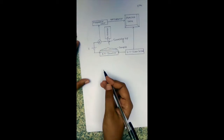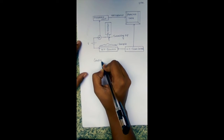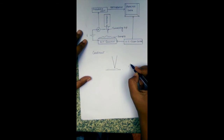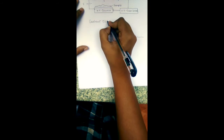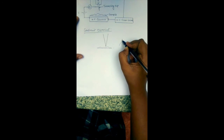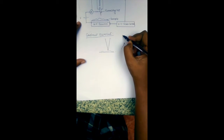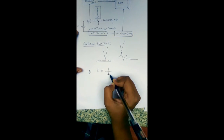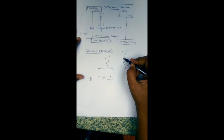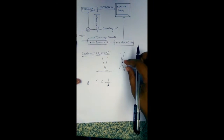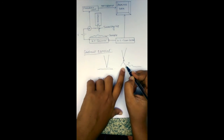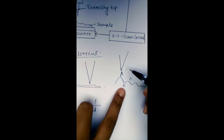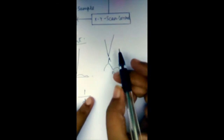There are two modes of a scanning tunneling microscope: constant current and constant height. In the constant current mode, suppose the surface has irregularities at points A, B, and C. The current generated is inversely proportional to the distance between the tunneling tip and the surface. When the tip is closer to the surface at point A, a strong current is generated. As the tip shifts toward region B where the distance increases, the current decreases.